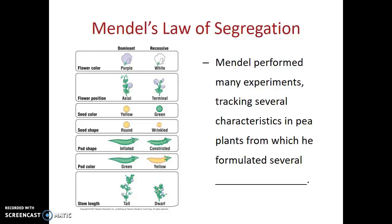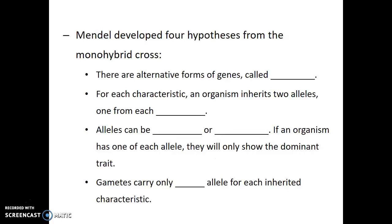From these repeated experiments, Gregor Mendel formulated several hypotheses. First, he said there would be alternative forms of the heritable characteristic — what we call genes — and he called these different forms alleles. For example, for the flower color gene, there are two options: the purple flower color allele or the white flower color allele. These are two different versions of the flower color gene.